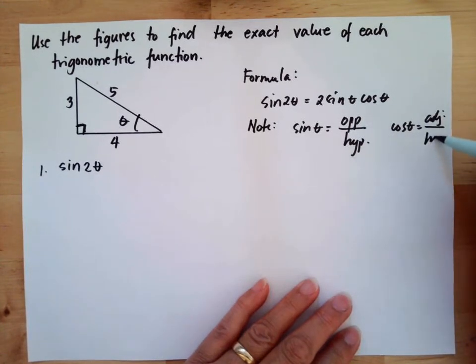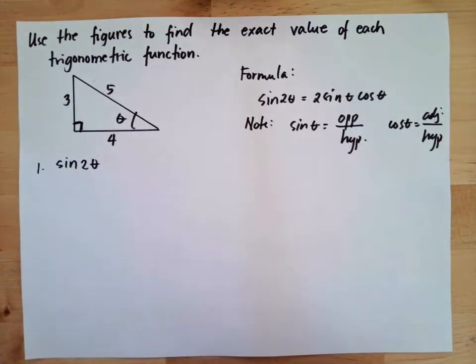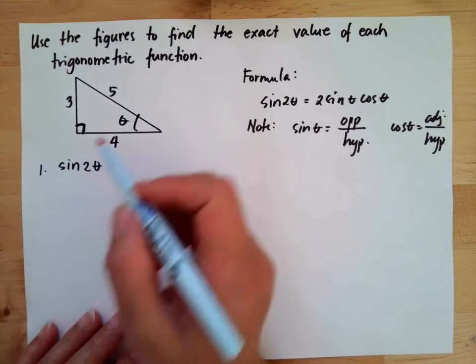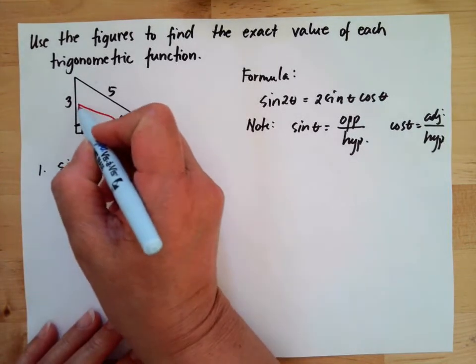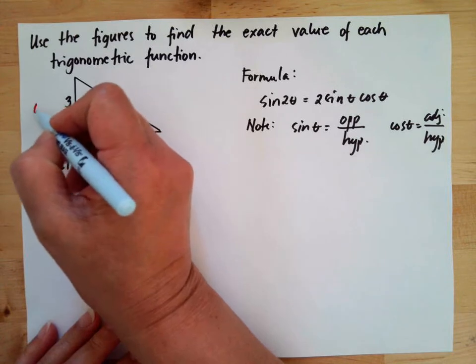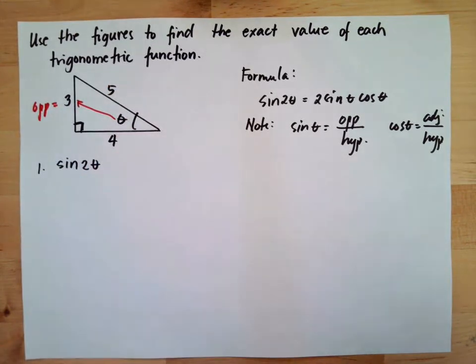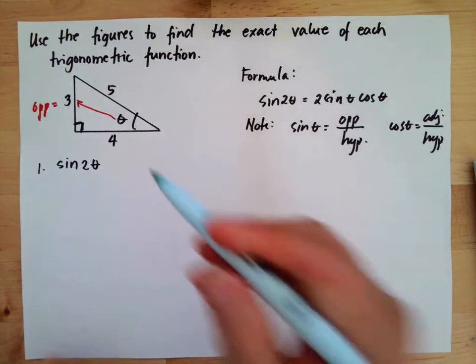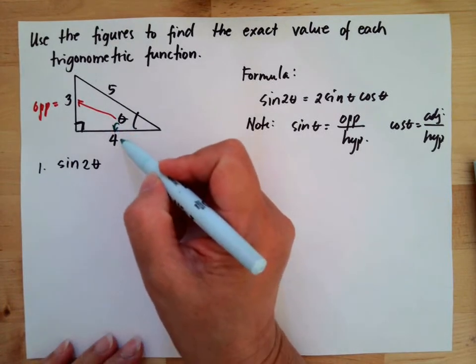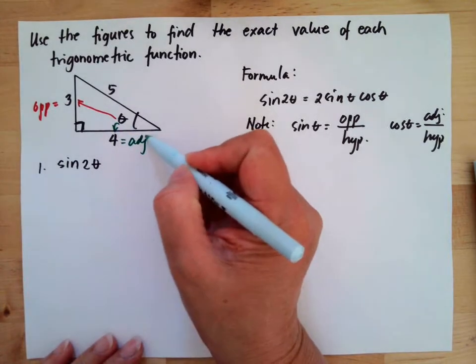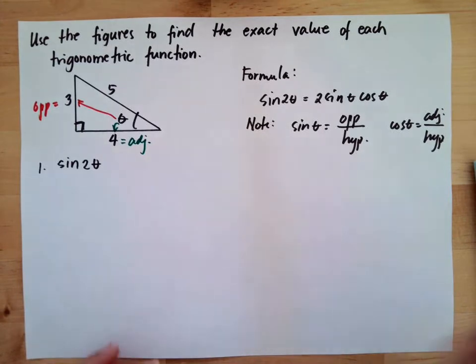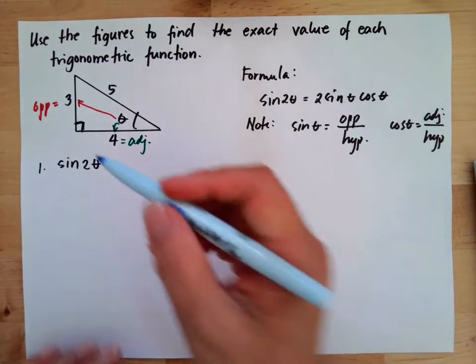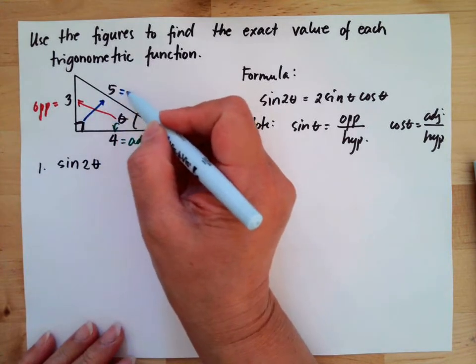Let's identify the opposite, adjacent, and hypotenuse in our triangle. The opposite of theta is 3, the adjacent of theta is the one beside it, which is 4, and the opposite of 90 degrees is always the hypotenuse, which is 5.